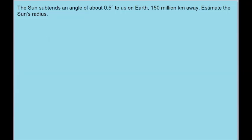In this problem, we want to estimate the radius of the sun based on the angle that it subtends with respect to us. If it's not clear what the problem is asking, basically, let's imagine this is Earth, and this is the sun.